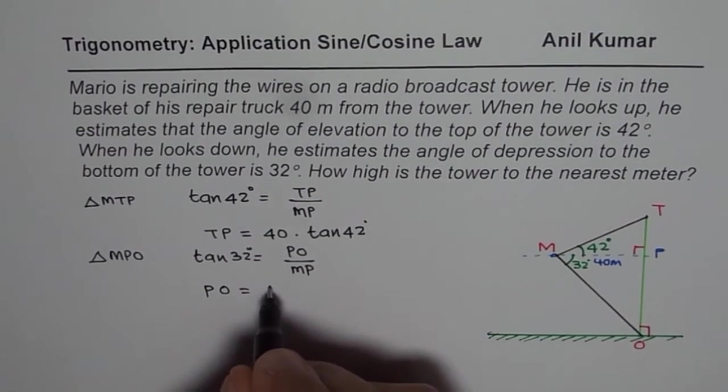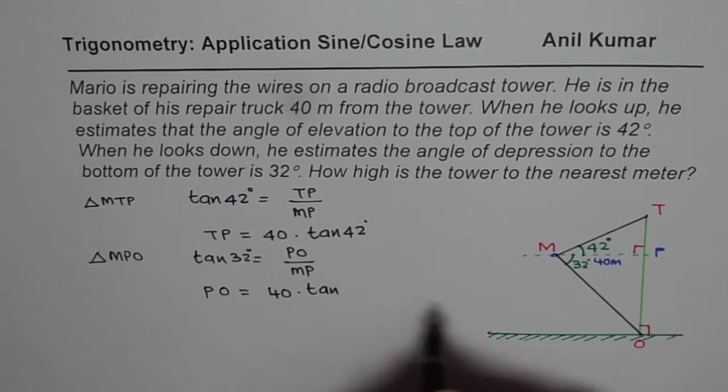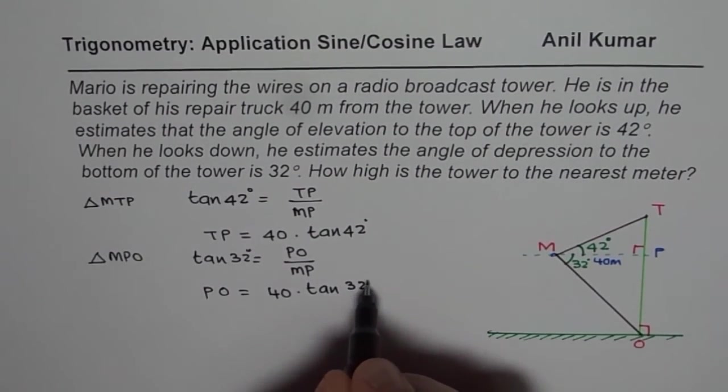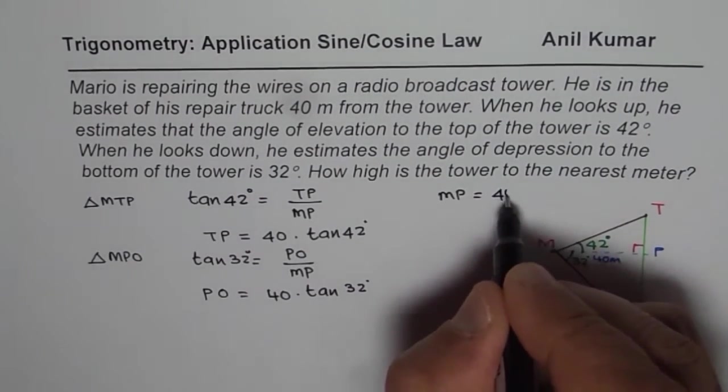So, PO is MP, which is 40. I will write 40 times tan of 32 degrees. So, MP is 40 meters.